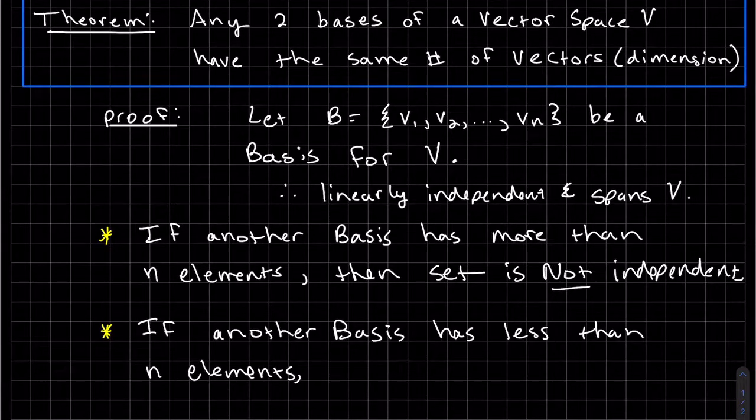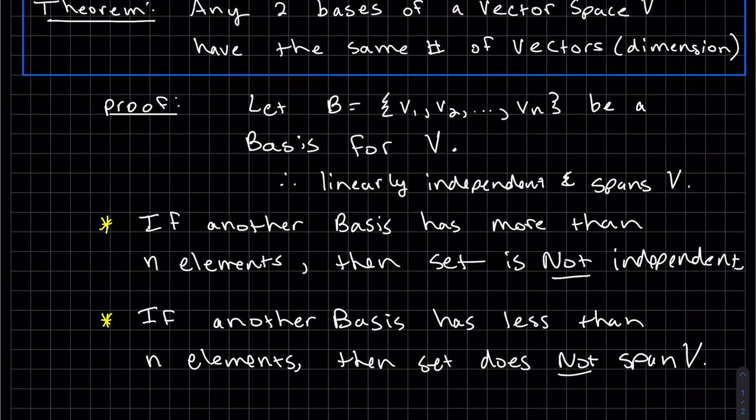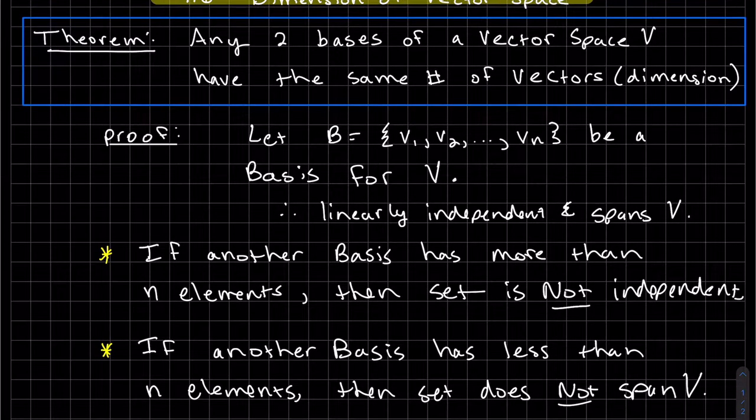If another basis has less than n elements, there's not enough of them, so therefore it won't span v, which is another contradiction. Therefore, any two bases of a vector space do have the same amount of vectors.